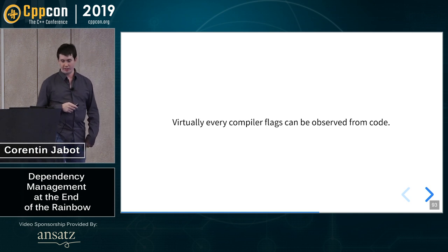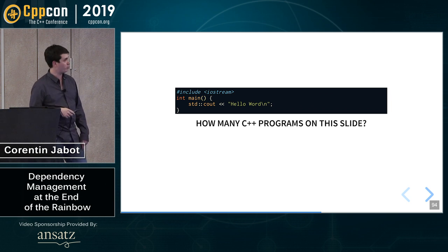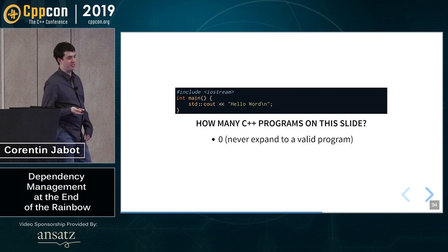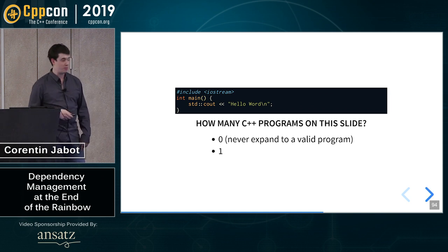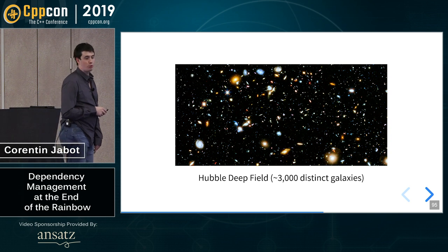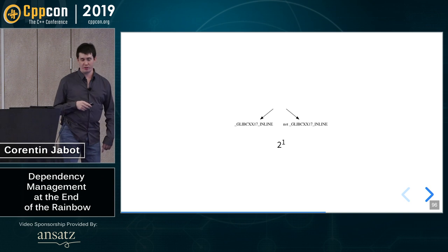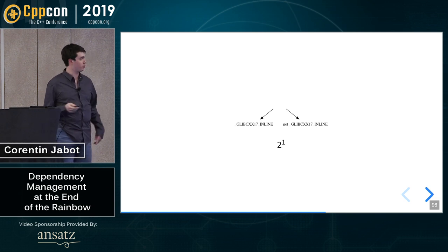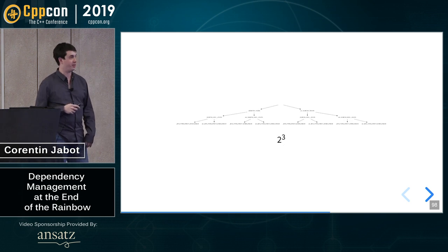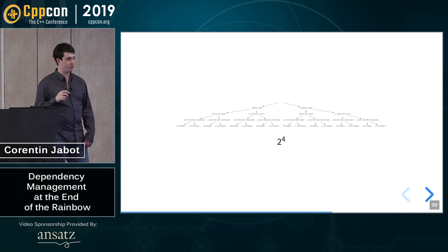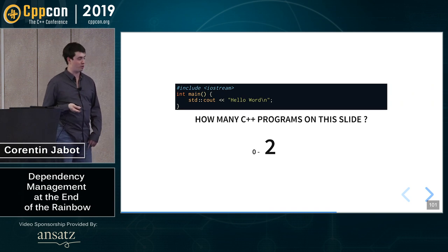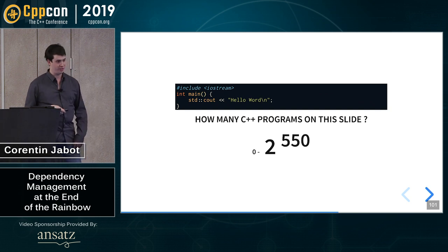Ask yourself for every thing you're trying to do with a build system: is it a property of the tool or a property of the code? If it's a property of the code, put it in the code rather than the build system. Keep your build system simple. Because the problem with compiler flags is that everything can be observed from the code. Here's an interesting question: how many C++ programs are on this slide? Maybe there's none — maybe this program is not valid. Maybe there is one. Let me give you a clue. If you open iostream, you'll find a couple of ifdefs. That ifdef may be defined or maybe not. And you find another one, and another one. All of these nodes are actually complete AST nodes. Which means in this slide, there may be zero, or there may be two to the power of 500 different C++ programs. Maybe they are valid, maybe not — but you don't know if you're a tool.